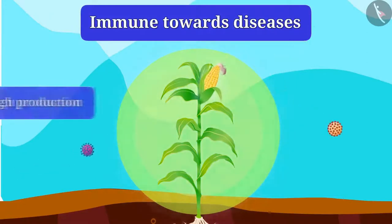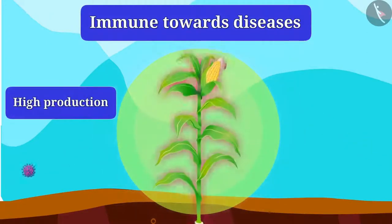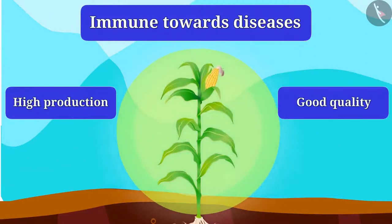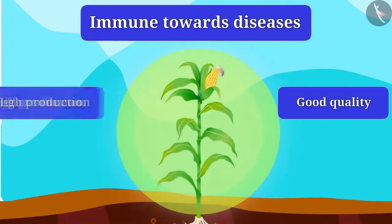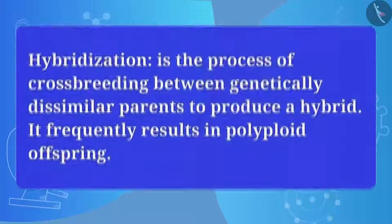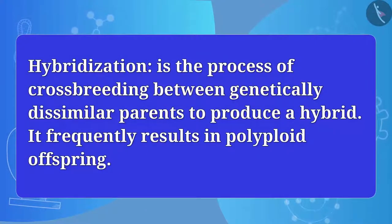It should have high production and it should be of good quality. And one way to include all these desired features is hybridization.